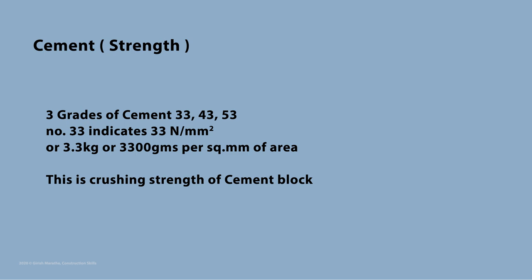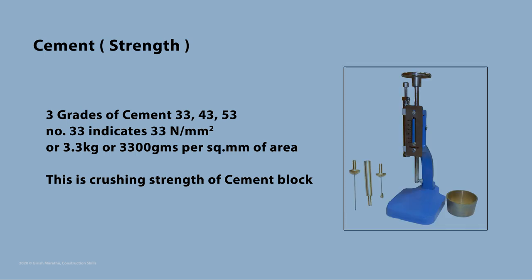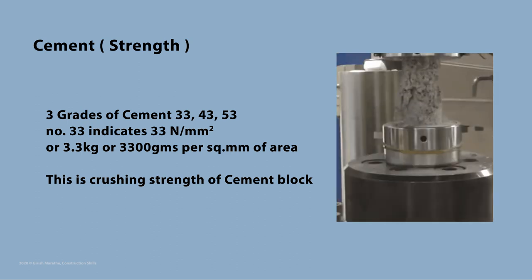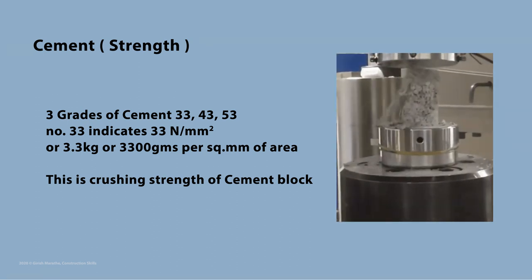Cement is available in three grades: 33, 43, and 53. The number indicates the strength after mixing cement with sand and water and testing in small cubes using Vicat's apparatus, as shown in the figure. For example, grade 33 indicates a compressive strength of 33 newtons per mm², or 3,300 grams per mm², as can be seen in the graphics.